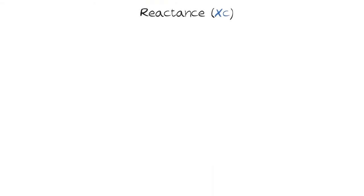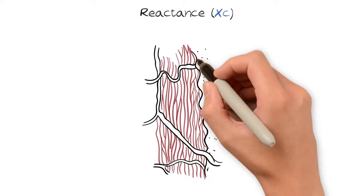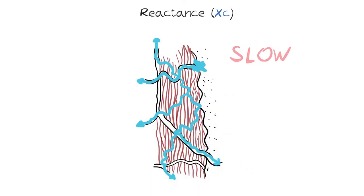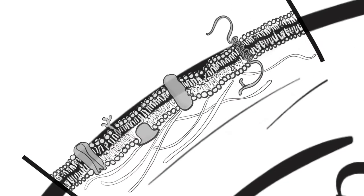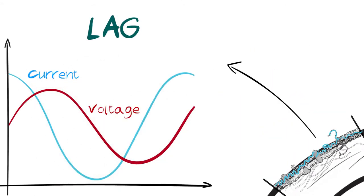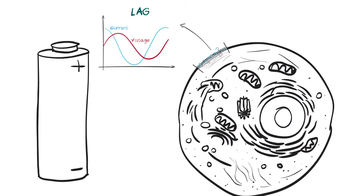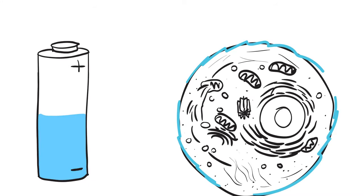The other component of impedance is reactance, and is the measure of a material's ability to slow a current. For example, cell membranes can store a charge for a short period of time, thus slowing the current. The slowed current is said to lag behind the rest of the current, and the cell membranes can hold this charge for a short period of time.